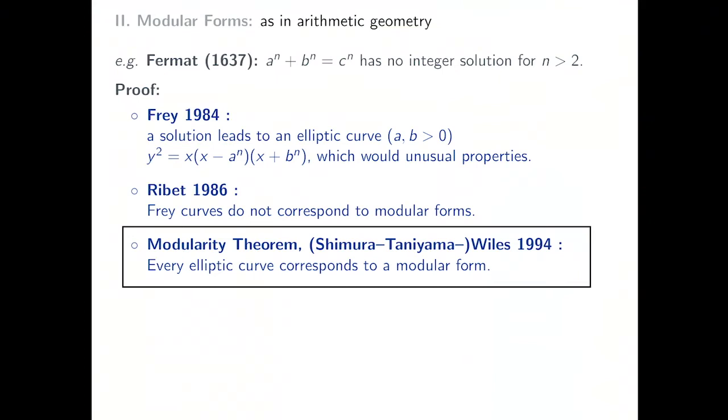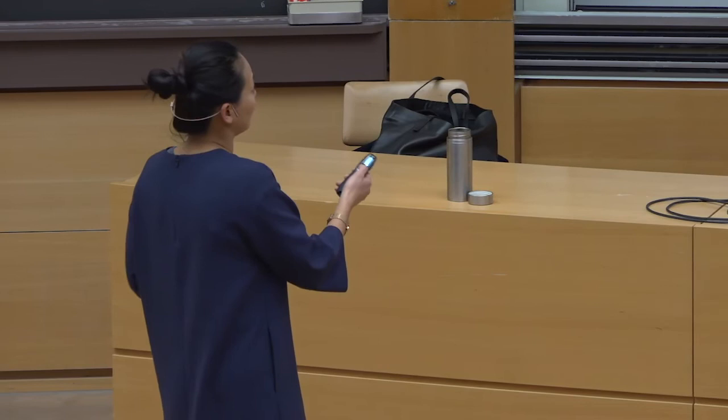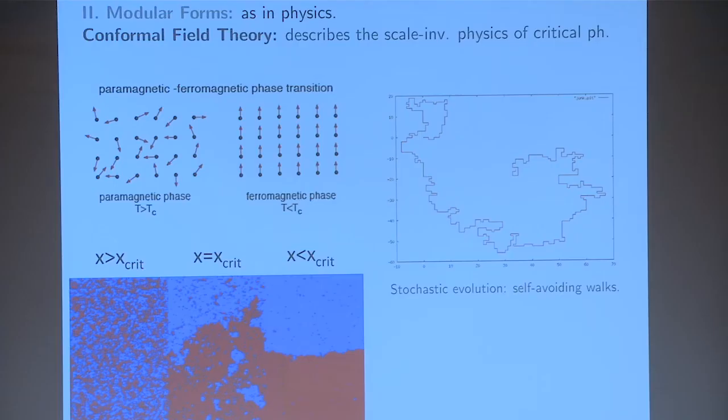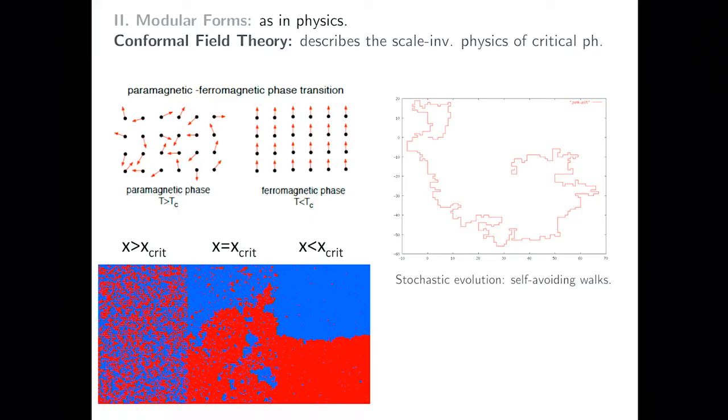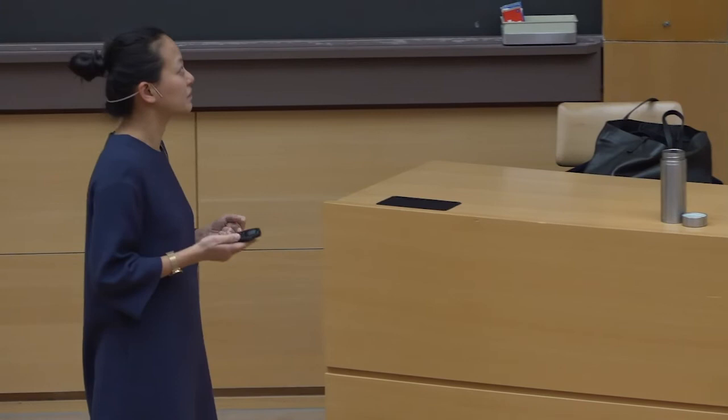Modular forms are also important in physics — specifically in two-dimensional conformal field theory. Conformal field theory is a type of quantum field theory that enjoys conformal symmetry, and it thereby describes the scale-invariant physics of systems approaching a critical point, like the classic example of a ferromagnetic phase transition. Because of this property, it also captures stochastic evolutions such as random walks and self-avoiding walks.